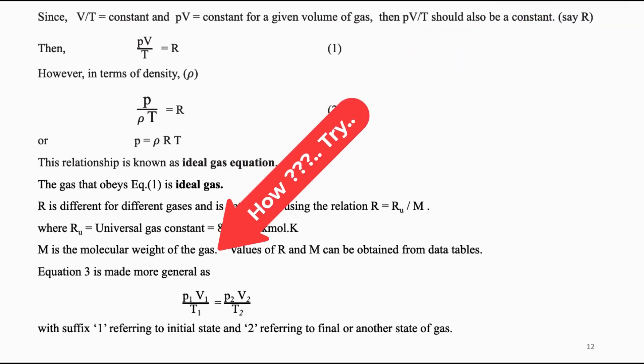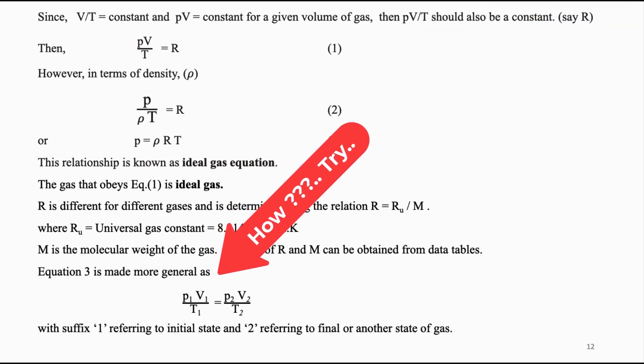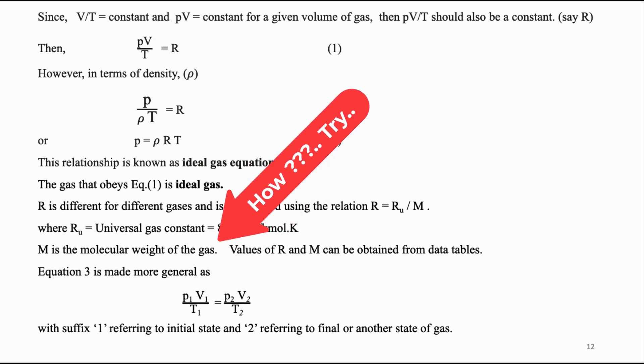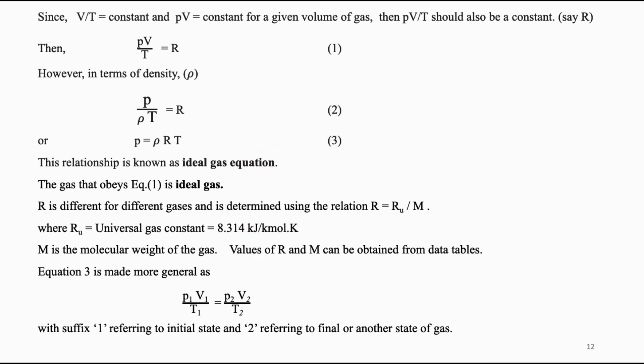The equation is made more general as P₁V₁/T₁ = P₂V₂/T₂, where suffix 1 refers to the initial state and suffix 2 refers to the final or some other state.